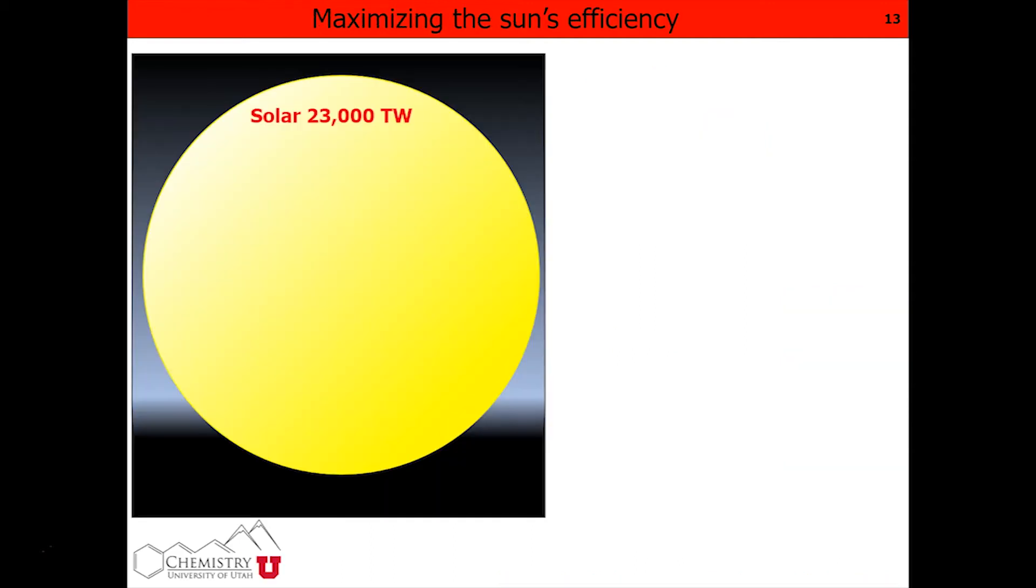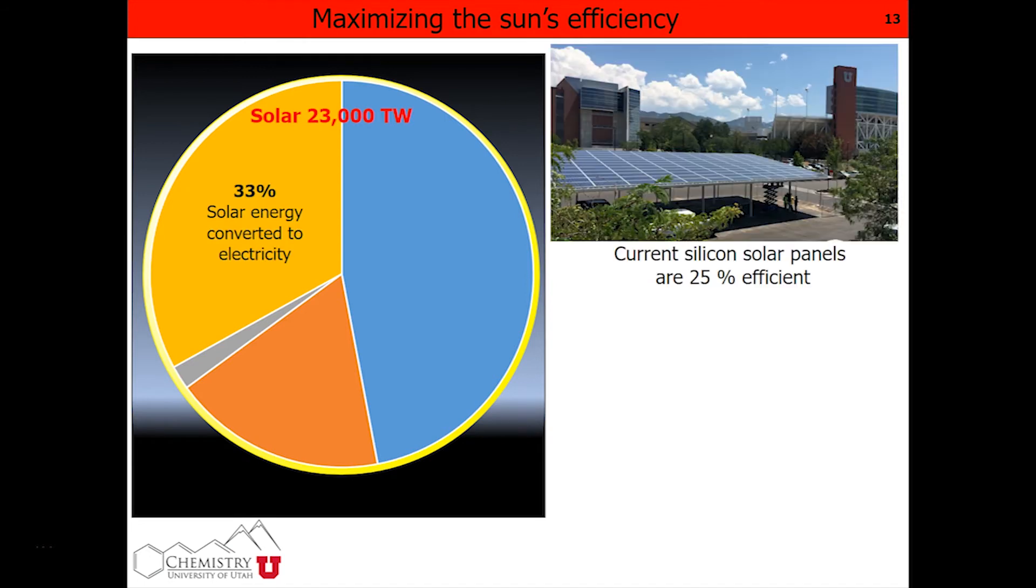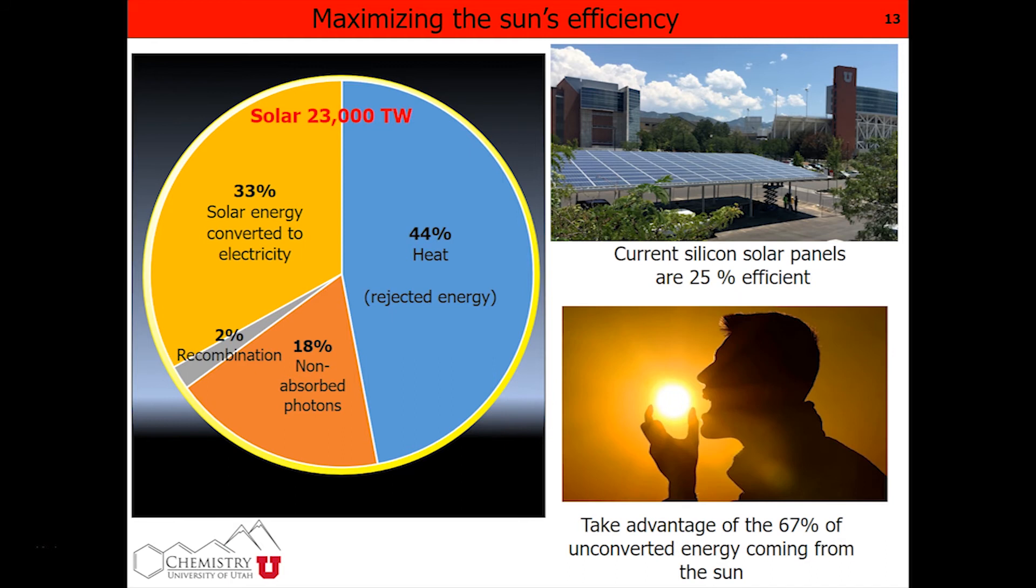We have solar energy. The sun produces a lot of that. Based on the theoretical limitations, only 33% of solar energy can be converted into electricity. That means there is 67% left. Can we come up with technologies where we can actually convert that 67%, which is actually heat? Can we convert heat into electricity to make the process more efficient?